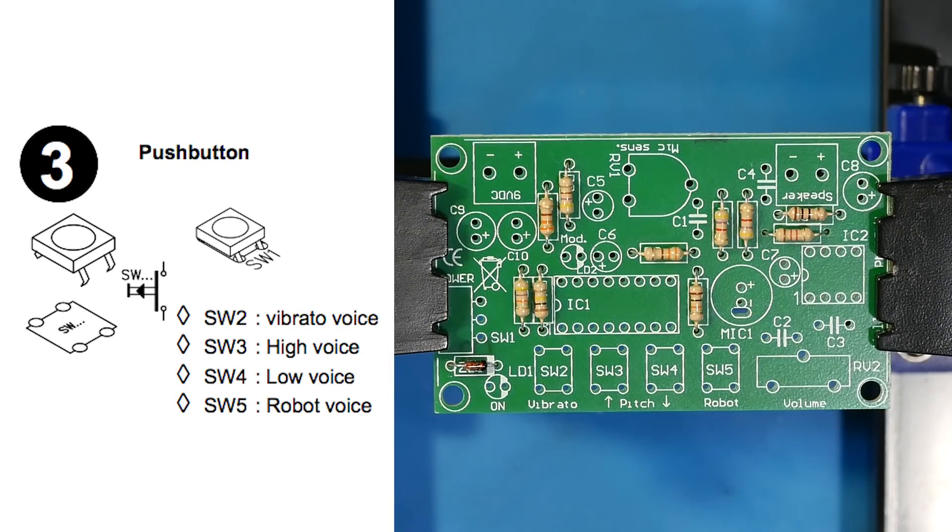In step three, we place the four push buttons, or tack switches. If you look closely at the symbol, you can see that it's a normally open push button. These four tack switches will go in SW2, SW3, SW4, and SW5. And you can see each is labeled with vibrato, pitch up or down, and robot for what they'll do when the circuit is complete.